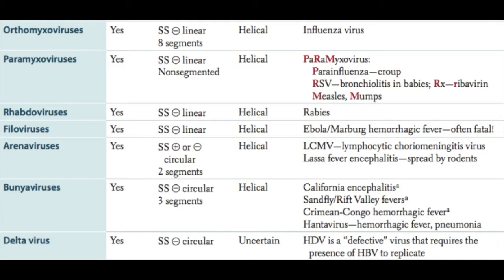Orthomyxoviruses are single-stranded and have negative RNA genomes, a helical capsid symmetry, and the classic orthomyxovirus is the influenza virus. To continue with the negative linear RNA genome viruses, we have the paramyxoviruses, the rhabdoviruses, the filoviruses, the arenaviruses, the bunyaviruses, and the deltavirus.